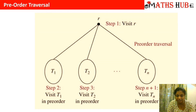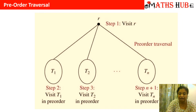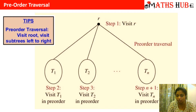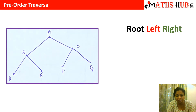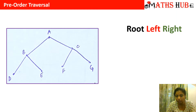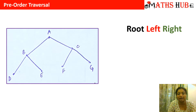In a pre-order traversal, step 1 is that you visit the root vertex first of all. Then in step 2, we visit the left subtree in pre-order, and then we visit the right subtree. In short, we visit the root vertex first and we visit the subtrees from left to right. For every subtree, you have to first identify who is the root vertex, who is the left vertex, and who is the right vertex — only then can we write the pre-order traversal.